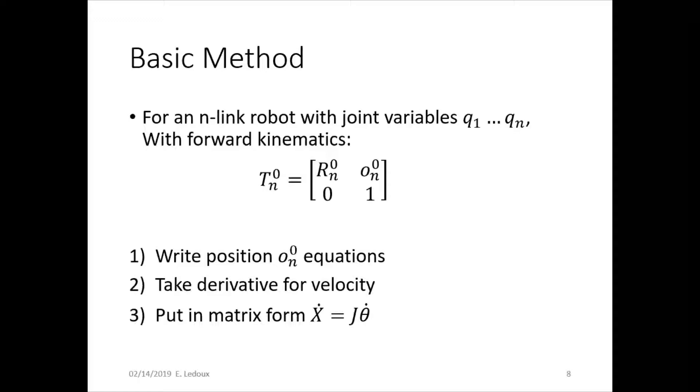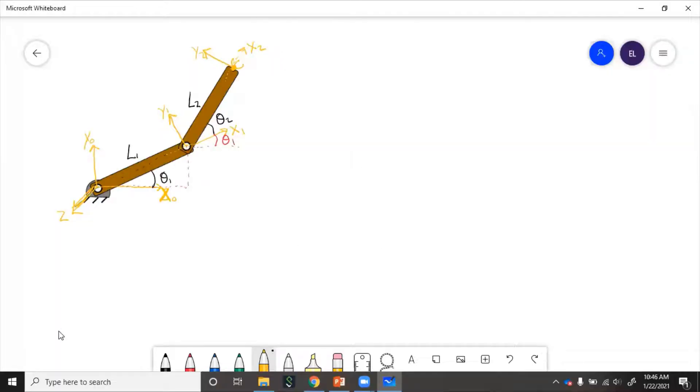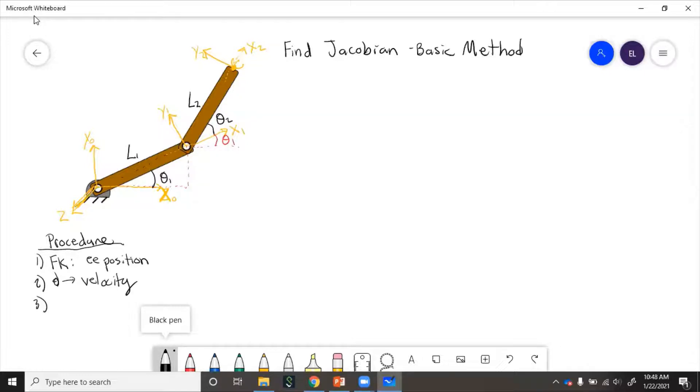So let's do an example of this. Here we'll do an example using the two-link robot and find the Jacobian of this. Step one is find the forward kinematics. Step two is take the derivative and get velocity. Step three is put it in matrix form.